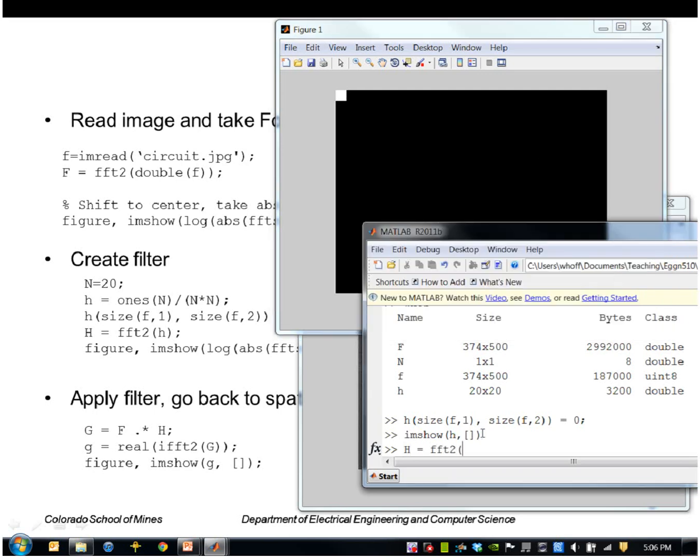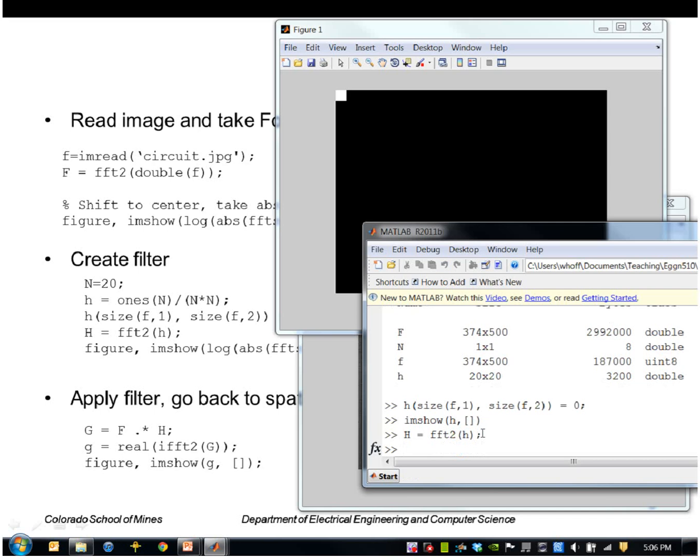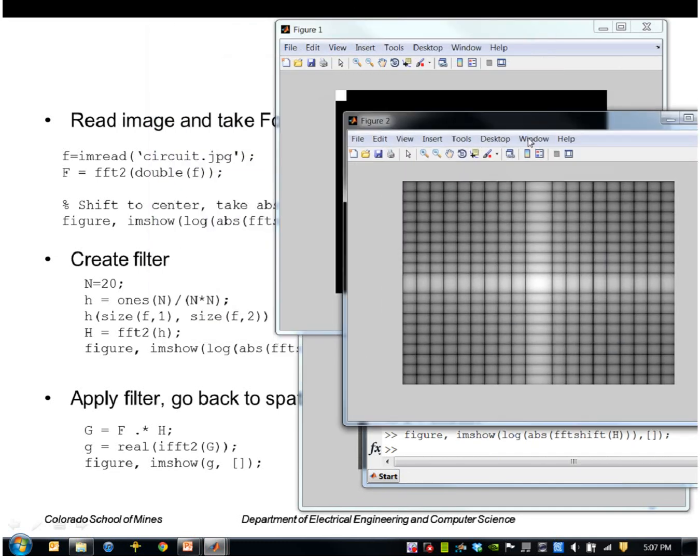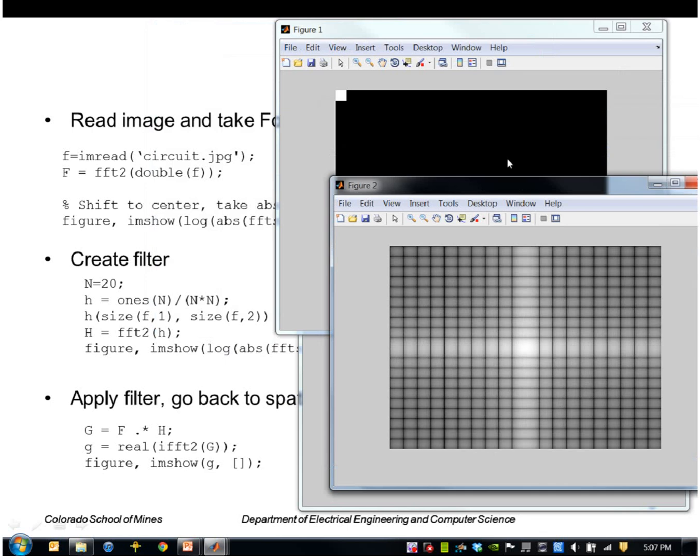Taking the fast Fourier transform of the filter is capital H and then viewing that for visualization. This is the Fourier transform of our filter and these lobes look like the sinc function. In fact it is a sinc function in two dimensions.